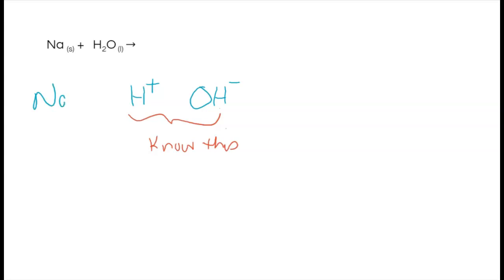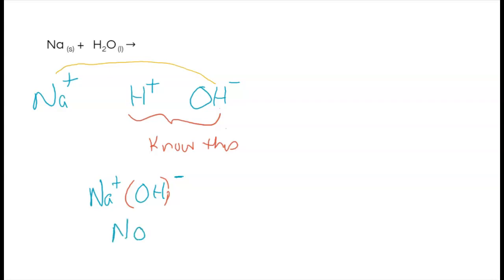Sodium has a plus one charge from the periodic table. Positive sodium goes with negative hydroxide. Doing the crossover rule with sodium plus one and hydroxide negative one — placing brackets around the polyatomic ion — gives sodium hydroxide (NaOH). The leftover hydrogen ion is part of the diatomic elements, so we write it as H₂.